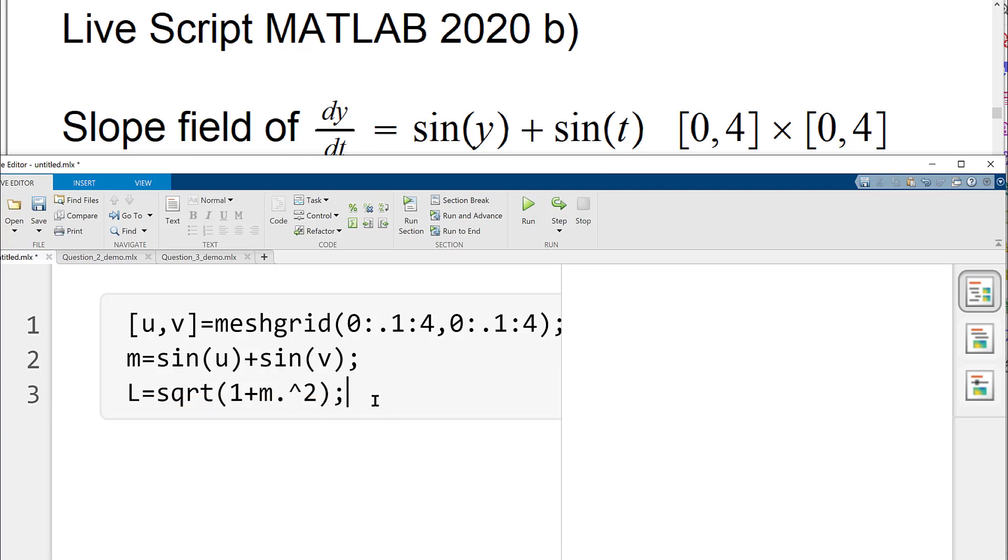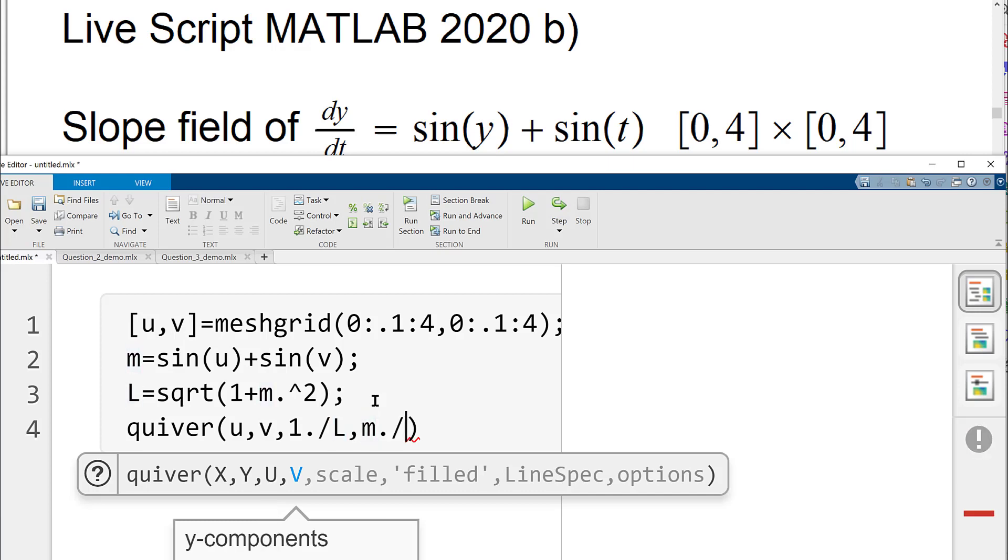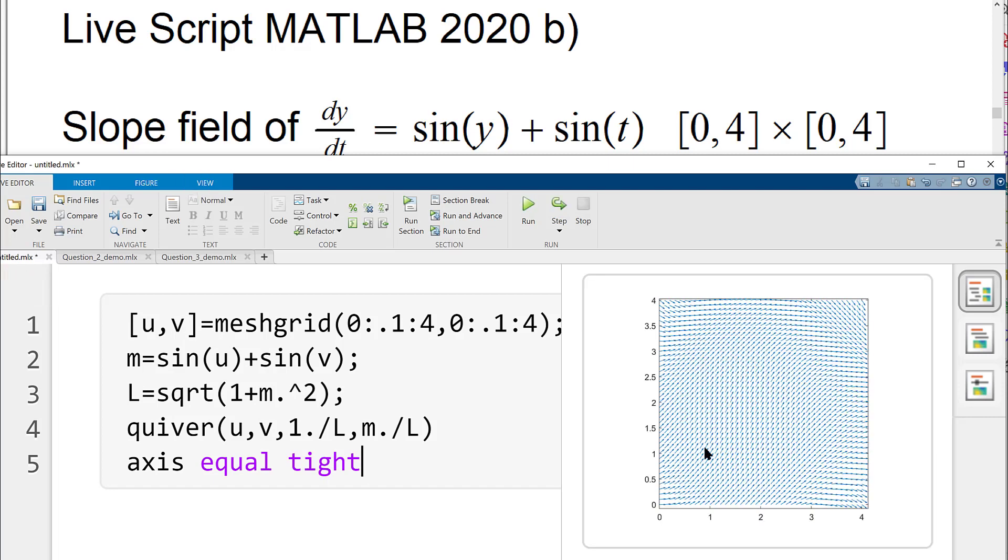And then quiver is going to give us the vector field. So what we would do is, we will just ask for quiver. And remember this, the first component is 1, so we write that. And again, we have to put a dot before the operator. And then we can say axis equal and let's just see how does the plot look like. So here is a plot and looks like a pretty good plot here.